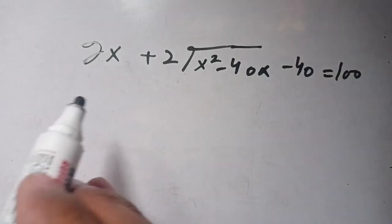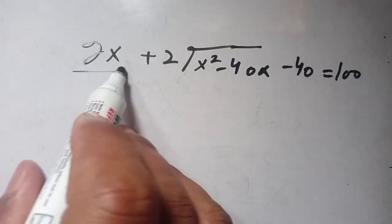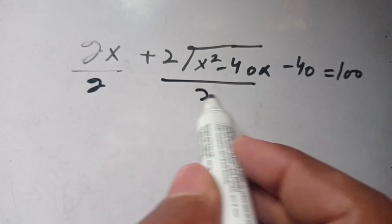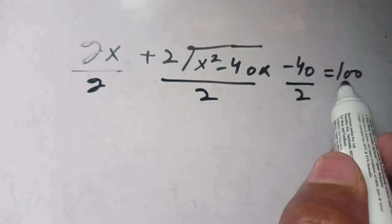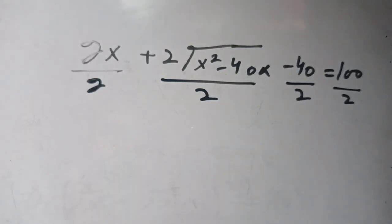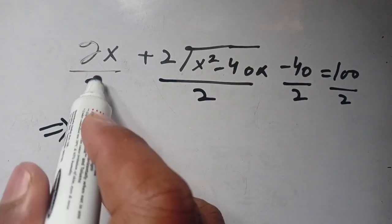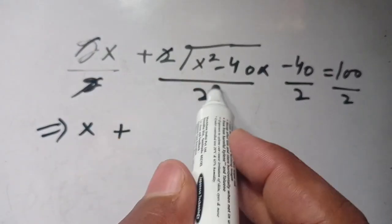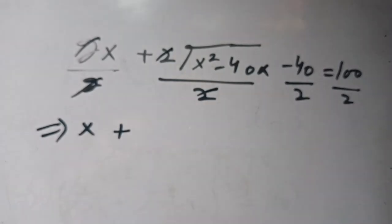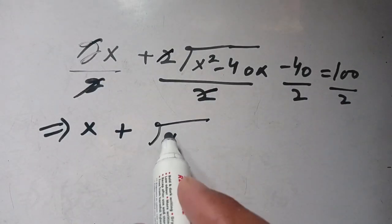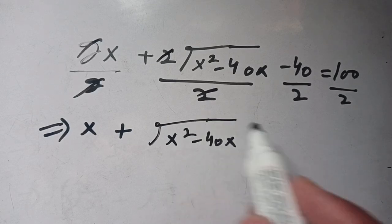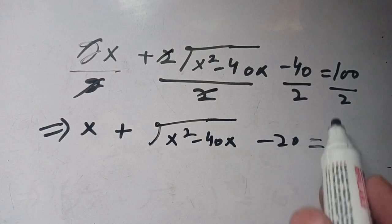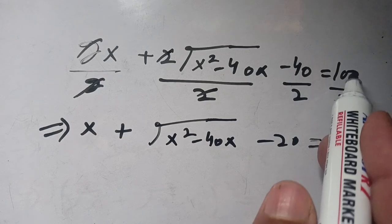We divide both sides by 2. We get 2x divided by 2, plus 2 times square root of x(x minus 40) divided by 2, minus 40 divided by 2, equals 100 divided by 2. The 2s cancel, leaving x plus square root of x² minus 40x, minus 20, equal to 50.